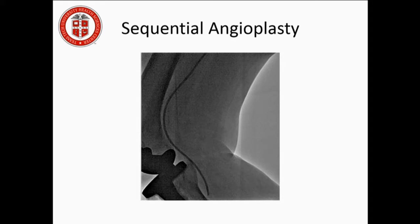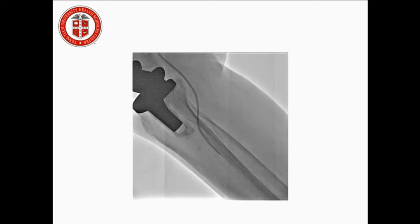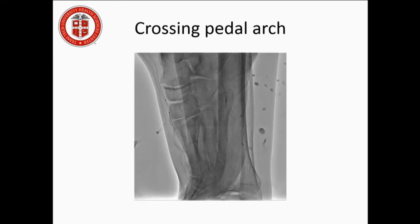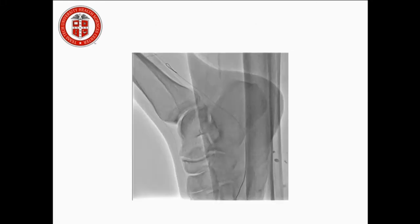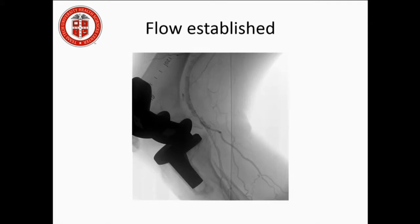We started sequential angioplasty. Here we are crossing the pedal arch, we remove the retrograde axis from below, and we're going from above and crossing the pedal arch. Flow is now established.